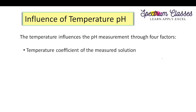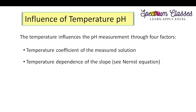pH measurement is affected by temperature in four different ways: first, the temperature coefficient of the measured solution; second, the temperature dependence of the slope according to the Nernst equation; third, the position of the isothermal intersection — which I will discuss while covering calibration of the pH meter.